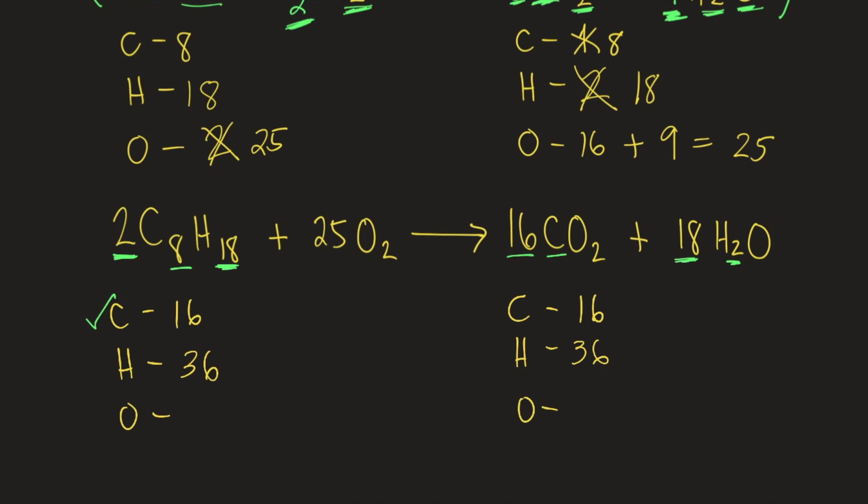And for oxygen, on the left side, we have 25 times 2, that's 50. On the right side, we have 16 times 2, that's 32, plus 18 times 1, that's 18. So 32 plus 18 is 50. So oxygen is already balanced.